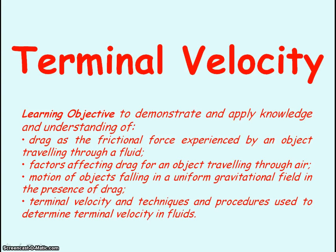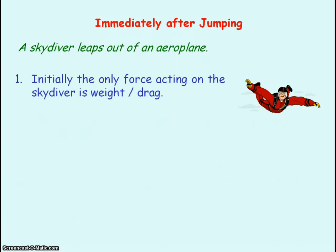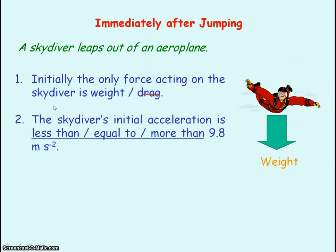We're going to be looking at the motion of an object that is free-falling in the presence of drag. Consider a skydiver who's just leapt out of an aeroplane. Initially, the only force acting on the skydiver is his weight — he does not experience a drag force. Drag is a frictional force, in this case air resistance, and the reason he doesn't experience it is because initially his velocity is zero. Due to the only force being weight, the initial acceleration of the skydiver will be equal to 9.8 metres per second squared — the acceleration due to gravity.